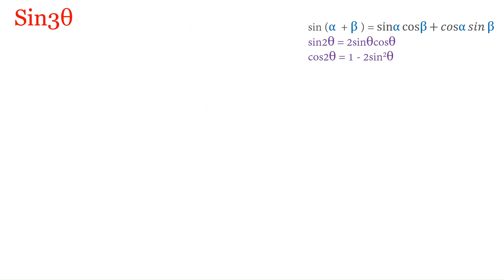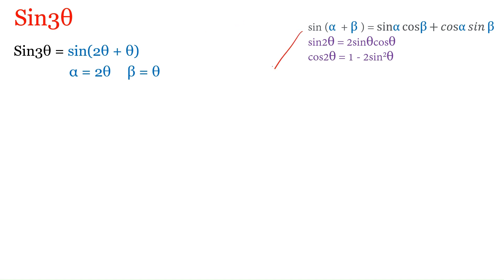For sin 3θ, the 3θ can be written as 2θ + θ. When we compare this with the sum formula, in place of α we have 2θ and in place of β we have θ. We substitute these values into the first formula — in place of α write 2θ and in place of β write θ.